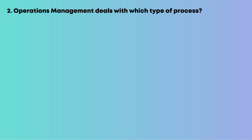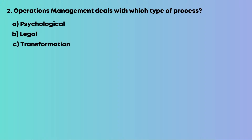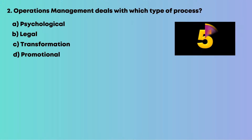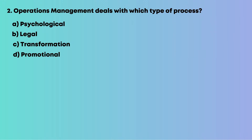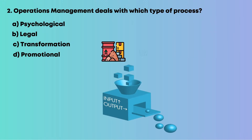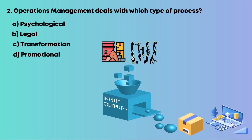Question 2: Operations management deals with which type of process? Options are: A, psychological; B, legal; C, transformation; D, promotional. It transforms inputs like materials and labor into outputs — goods or services. The answer is C, transformation.